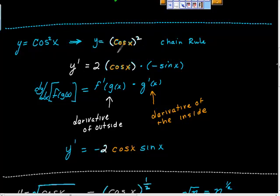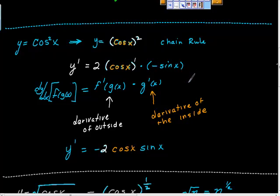Then this is just straight to the chain rule. The outside function: 2 times 1 gives this 2, and we decrease the exponent by 1, making it to the first power. We leave f(x) in there, which was cosine x, and then multiply by the derivative of the inside. The first derivative of cosine of x is opposite sine x. So we have the derivative of the outside times the derivative of the inside, which gives us negative 2 cosine x sine x.